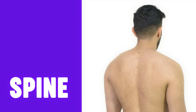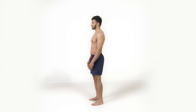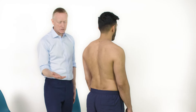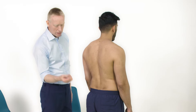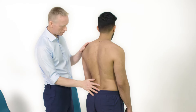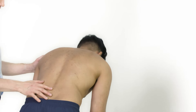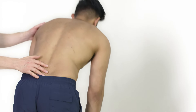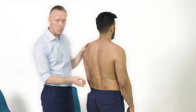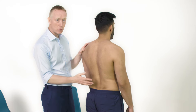Now we'll examine the spine. Moving to the side of the patient, we're looking to make sure that they've got a normal cervical lordosis, a normal thoracic kyphosis and a normal lumbar lordosis. I'll ask the patient to bend forward and touch their toes, using two or three fingers on the lumbar spine to assess lumbar spine movement. As the patient comes back up, those fingers should come together, indicating that the lumbar spine is moving and that movement isn't purely coming from the hips.